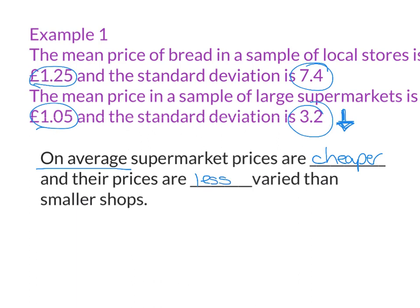Does that make sense in real life? Have you ever been to buy a loaf of bread at your corner shop compared to the supermarket? It's dearer at corner shops because they can charge more. Large supermarkets will all keep their prices roughly the same because of competition. Smaller shops' prices will be completely varied because some little corner shops will inflate the prices. Supermarkets need to keep all their prices the same because they need to compete with each other. So: 'on average supermarket prices are cheaper and their prices are less varied than smaller shops.' I would not write any more than this. The shorter and sweeter the sentence, the easier it is to mark and get full marks, and less chance of contradicting yourself.